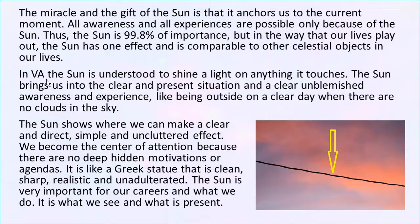So to read the second paragraph: in vibrational astrology, the Sun is understood to shine a light on anything it touches. On the next few slides, I'm going to give more concrete examples. The Sun brings us into the clear and present situation and a clear, unblemished awareness and experience. The Sun is like being outside on a clear day when there are no clouds in the sky. It's light. It's like a 'what you see is what you get.' The Sun shows where we can make a clear and direct, simple and uncluttered effect. We become the center of attention because there are no deep, hidden motivations or agendas.